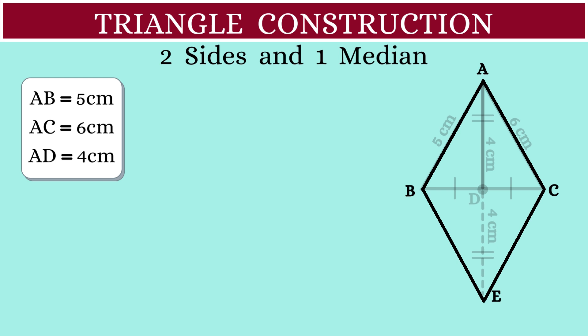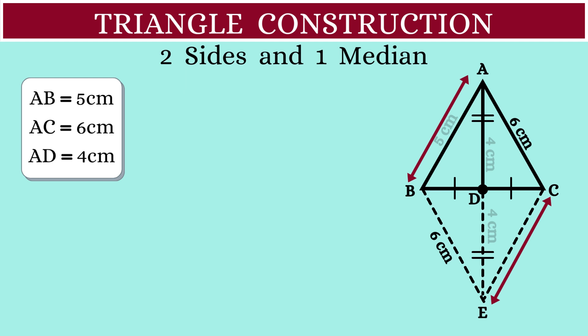This means that BE is the same as AC, which is 6 cm, and EC will be equal to AB, which is 5 cm.